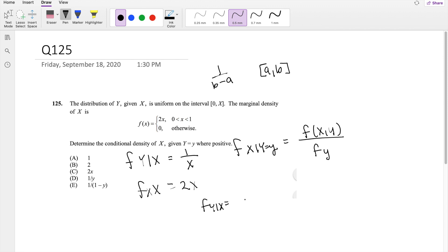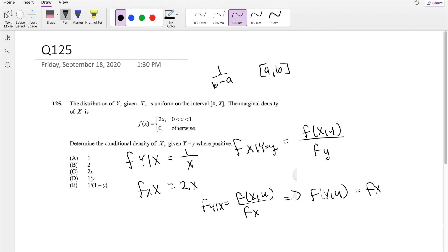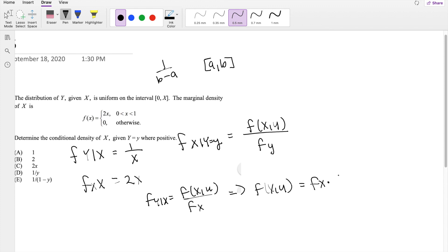So then we know that this equals f(x,y) divided by the marginal distribution of X. So then by definition, f(x,y), the joint distribution function, is equal to f(x), the marginal distribution of X, times f(y|x).